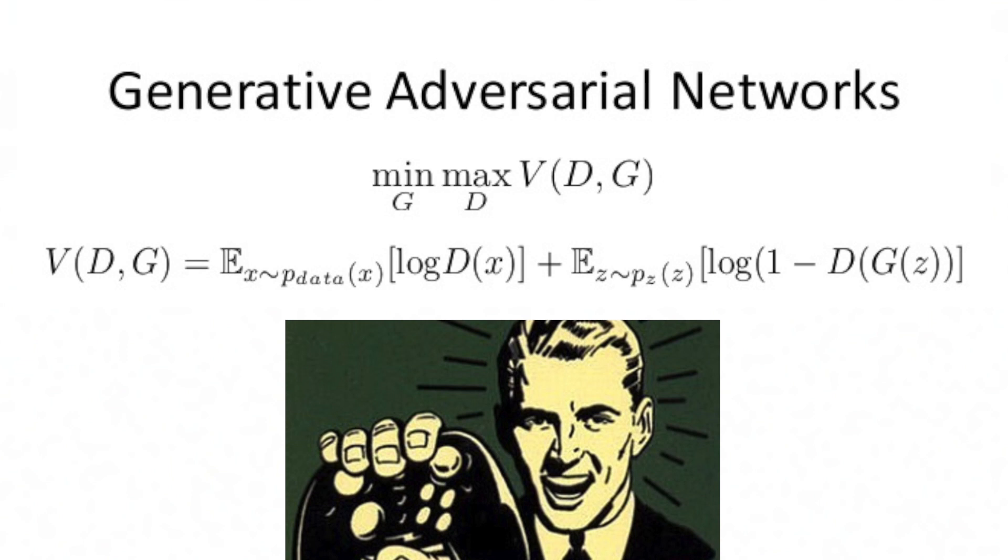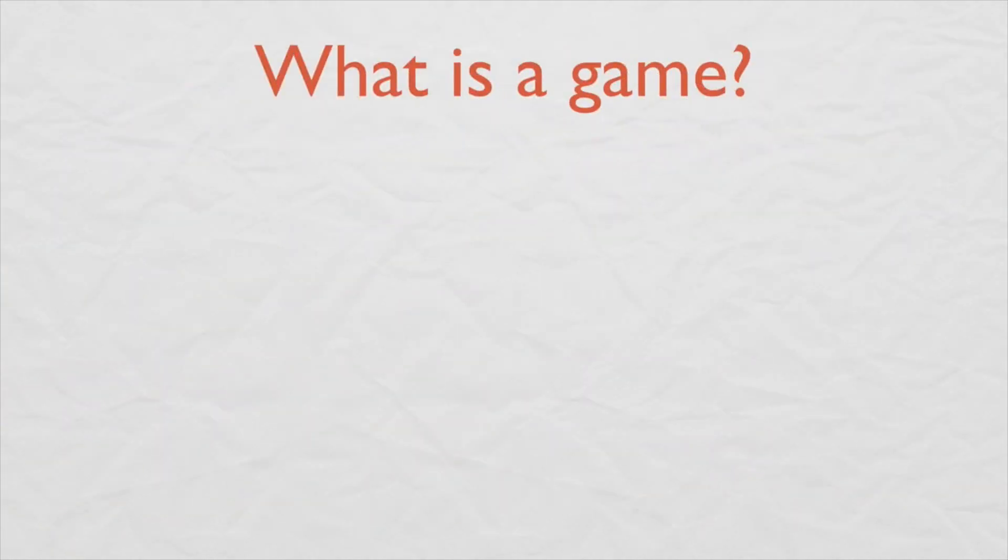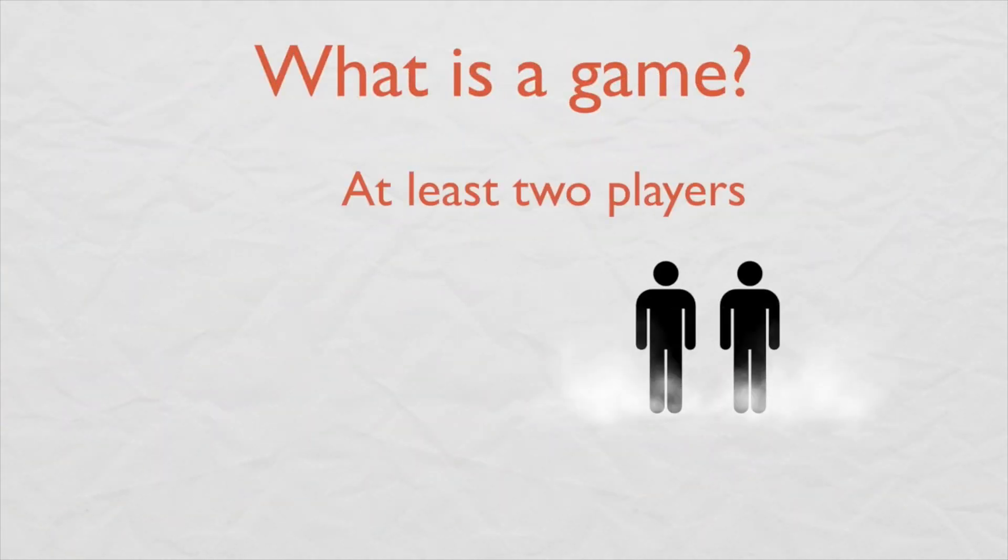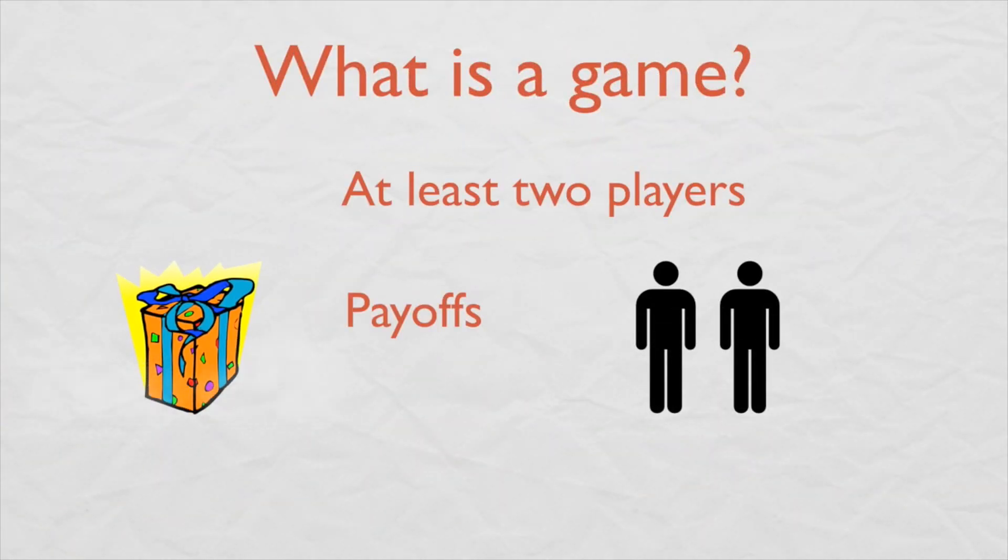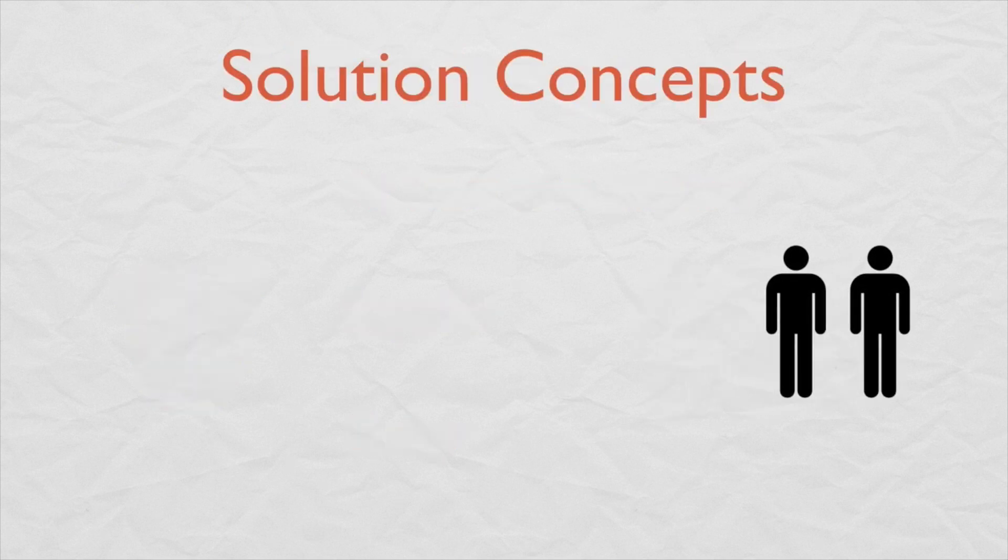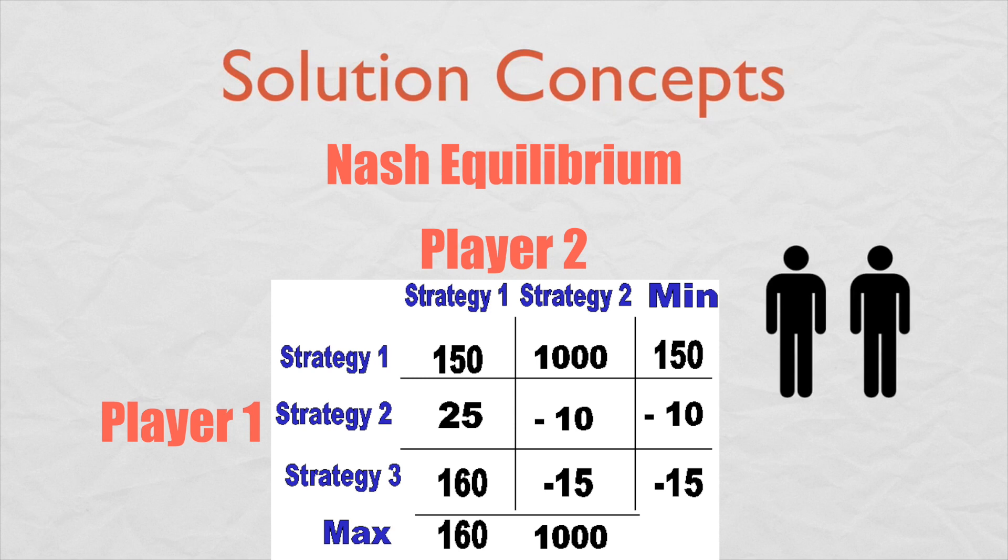Specifically, a Minimax game. Minimax is a strategy of always minimizing the maximum possible loss, which can result from a choice that a player makes, and the Nash equilibrium is where the optimal outcome of a game is one where no player has an incentive to deviate from his chosen strategy after considering an opponent's choice. So the way we train GANs is to find the Nash equilibrium of a Minimax game between G and D.